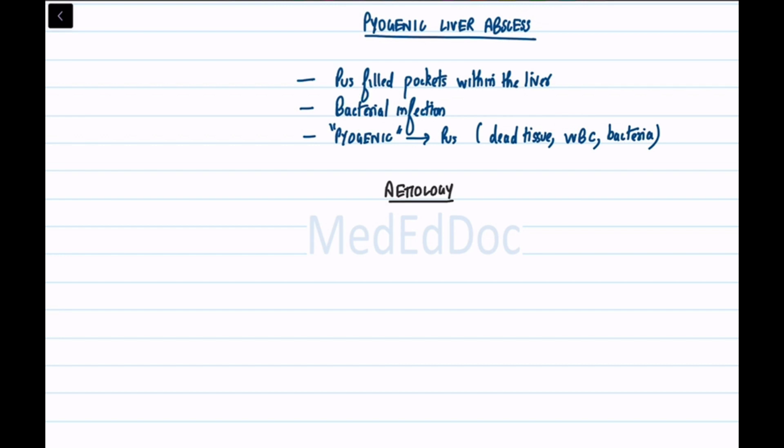Etiology: Pyogenic liver abscesses are caused by bacteria that reach the liver through various mechanisms. Portal vein bacteremia resulting from conditions like appendicitis, diverticulitis, or perforated bowel.